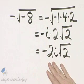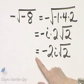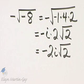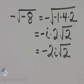If you want to write it in form a plus bi, you can write this as 0 plus negative 2i square root of 2, but I'll leave it like this.